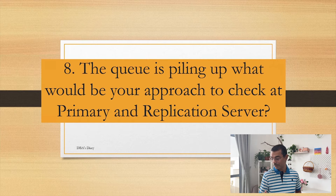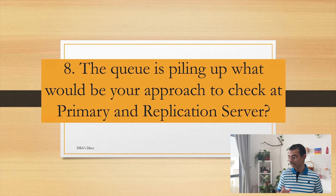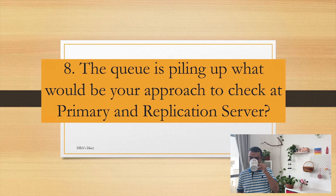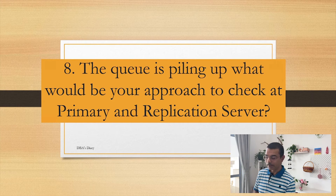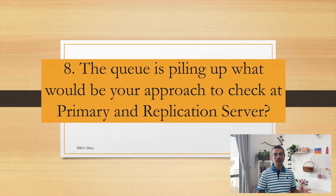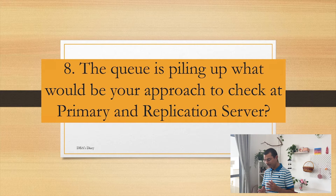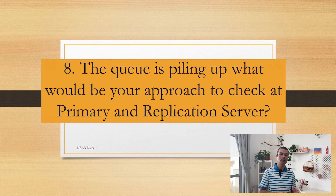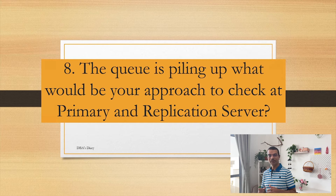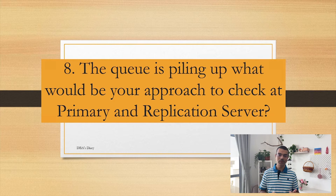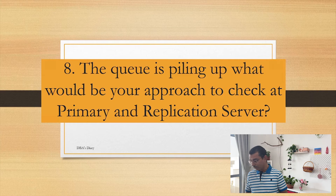The queue is piling up — what would be your approach to check at primary and replication server? If the queue is piling up and replication is not moving, you have to check what is happening. You can check from the primary server level or at the replication server level — like what is actually happening and why it is not moving. There are multiple steps and multiple things to check. I want to understand your approach. It depends on experience, but there are certain steps that are common. Give the use case from your environment if possible.